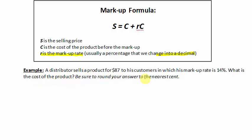Be sure to round your answer to the nearest cent. So he sells the product to his customers for $87, but that's not the price in which he bought the product from the vendor. The selling price is always more than the cost of the product before the markup. So let's find that.